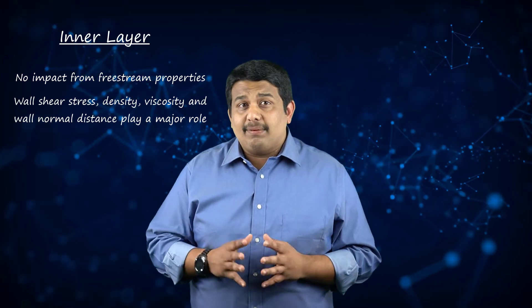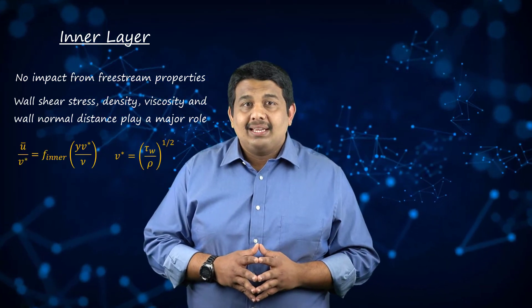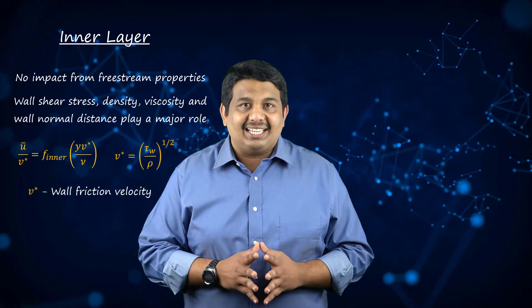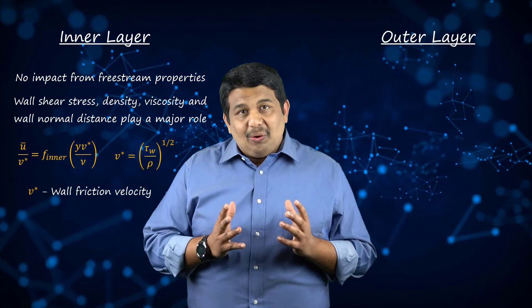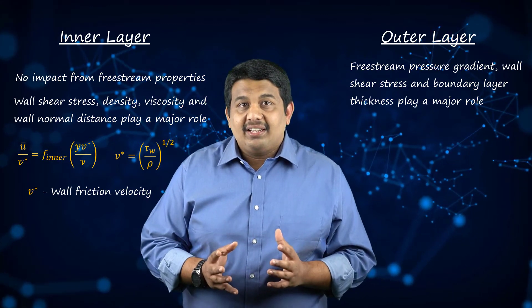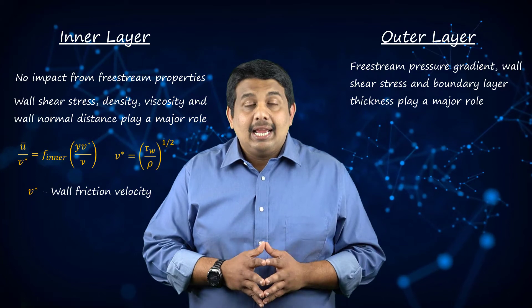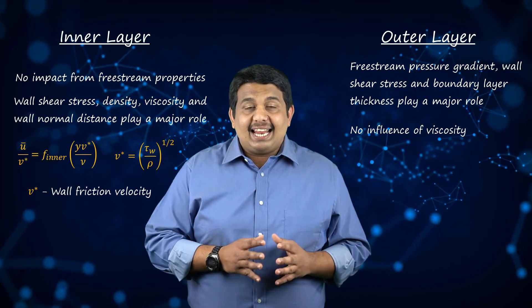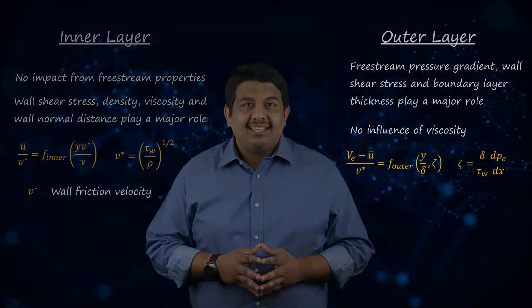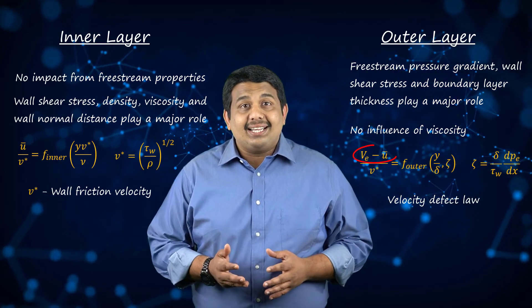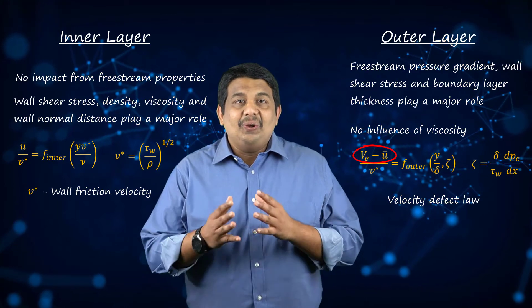Based on dimensional analysis, we can obtain two dimensionless variables that have the following form. Here, V* has the units of velocity and is called the wall friction velocity. On the other hand, in the outer layer, the velocity distribution is dictated by the free stream pressure gradient, wall shear stress, and the boundary layer thickness, but not the viscous forces. Based on dimensional analysis, we obtain the following relations. This relation is sometimes also referred to as the velocity defect law, where the circled term is the reduction in velocity due to the influence of the wall.